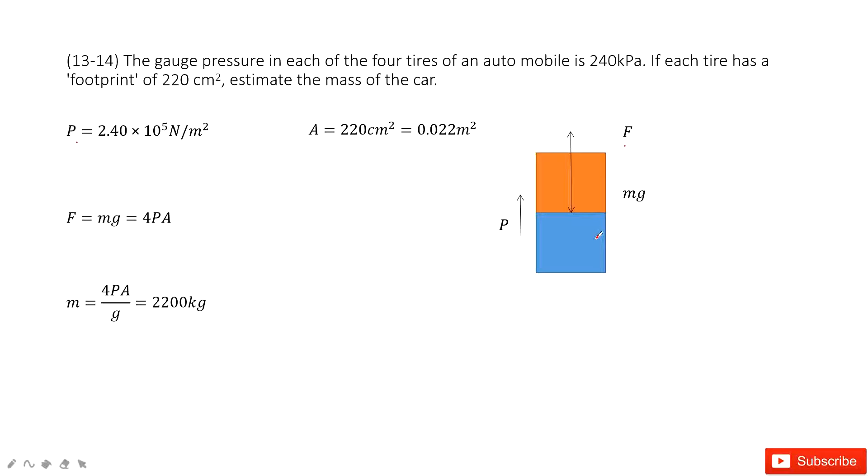And this force is exerted on the car. And this force must equal to pressure P times A. Therefore, we can see the F equals mg. The force is balanced, equal to 4 times PA because the car has four tires.